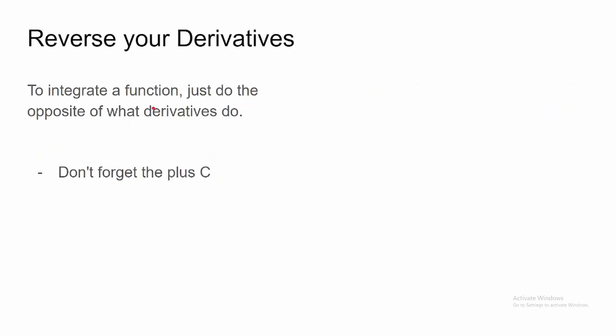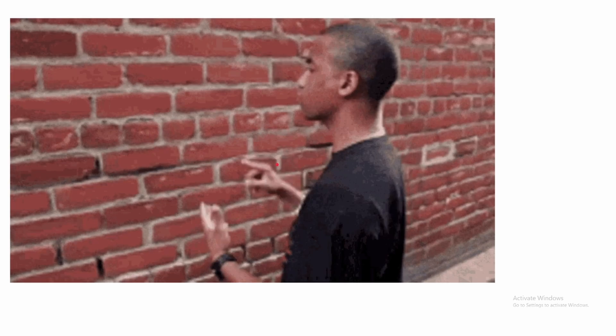So to integrate a function, just do the opposite of what derivatives do. And also, don't forget the plus C, because when you have a function and you take the derivative, you would get rid of a constant — like plus C being any constant.